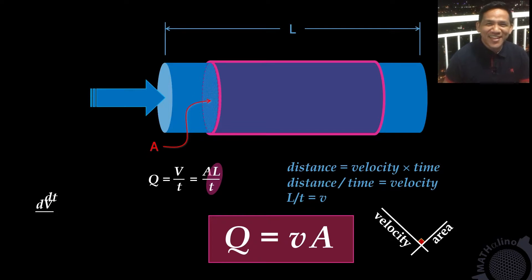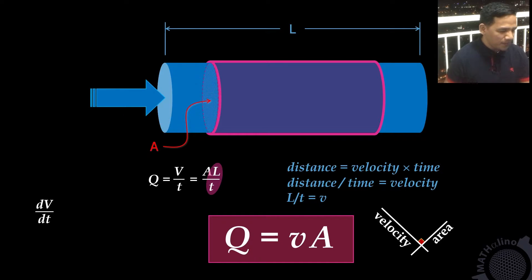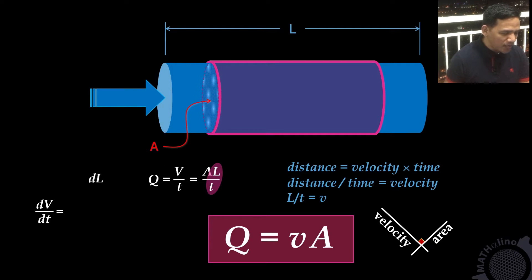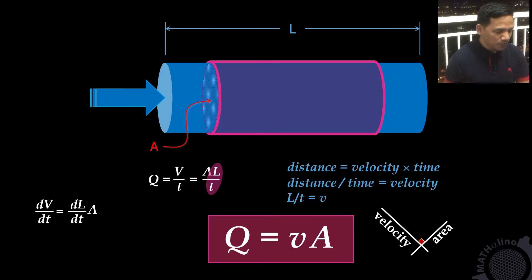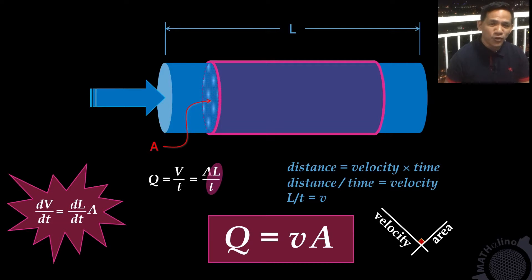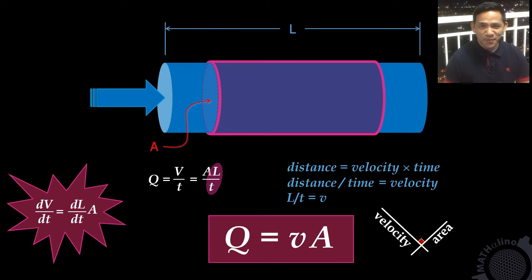When time is very, very small, let us call that dt. The volume will also become very small, dV. And dV/dt is equal to the length — which is also very small, dl — all over dt, times the area. Take note that dV/dt equals Q (the discharge), the velocity is dl/dt, and the area remains the area.